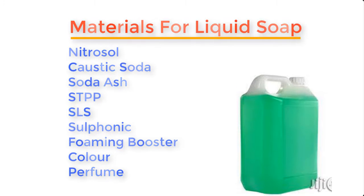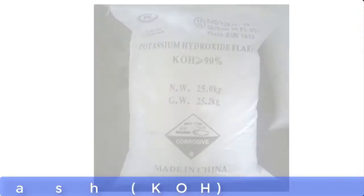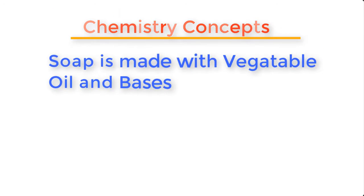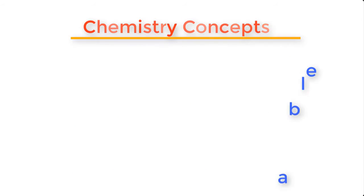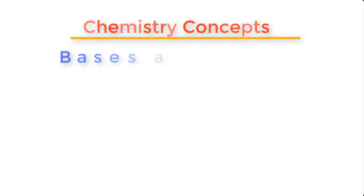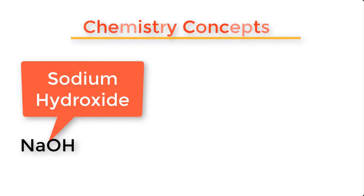But in this particular video you're watching right now, we will be producing liquid soap with just two major materials: any kind of vegetable oil and caustic potash. Before we go into the production proper, let me explain some basic concepts about soap making using vegetable oils and bases. In chemistry, bases are substances like sodium hydroxide with the chemical formula NaOH, which is also called caustic soda.